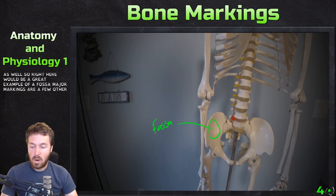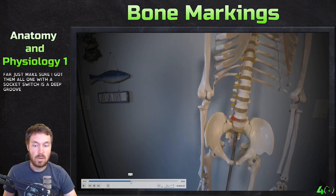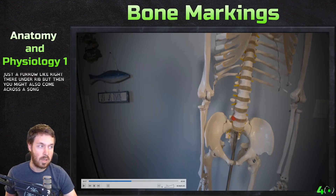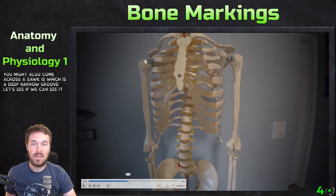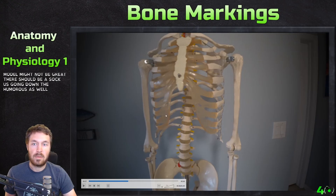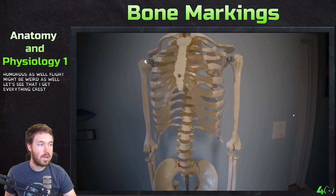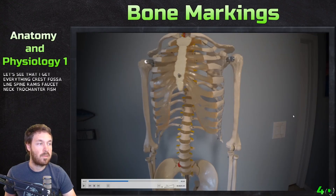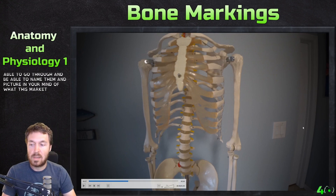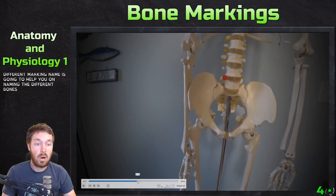Those are the major markings. A few additional ones: a sulcus, which is a deep narrow groove — different from a regular groove like on the rib. There should be a sulcus going down the humerus as well. Let's make sure we got everything: crest, fossa, line, spine, ramus, facet, neck, trochanter, fissure, foramen, sinus, canal, meatus, process. Be able to go through and name them and picture what each marking looks like. Knowing these marking names is going to help you tremendously when naming the different bones and parts of bones.